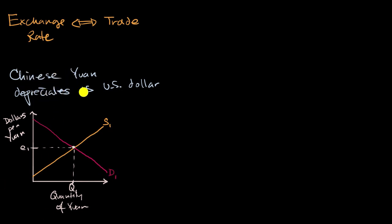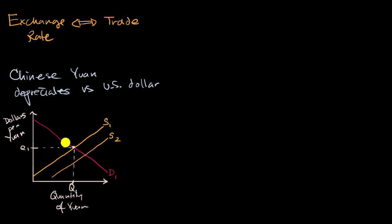A situation where the Chinese Yuan depreciates versus the dollar can happen in two ways: the demand for Yuan could shift to the left, or the supply of Yuan could shift to the right. Let's do the latter — supply shifts to the right. If our demand does not shift, we get a new equilibrium exchange rate, E sub two. For example, E sub one might be 15 cents per Yuan and E sub two might be 10 cents per Yuan.